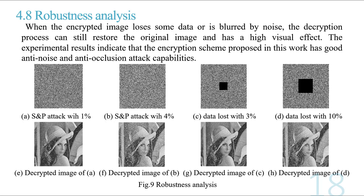Robustness analysis: When the encrypted image loses some data or is corrupted by noise, the decryption process can still restore the original image and achieves a high visual quality. The experimental results indicate that the encryption scheme proposed in this work has good anti-noise and anti-occlusion attack capabilities.